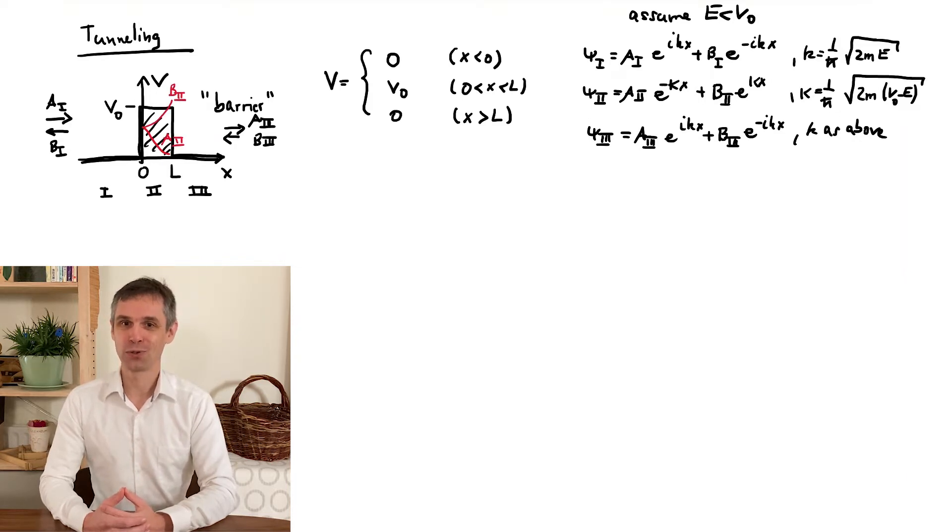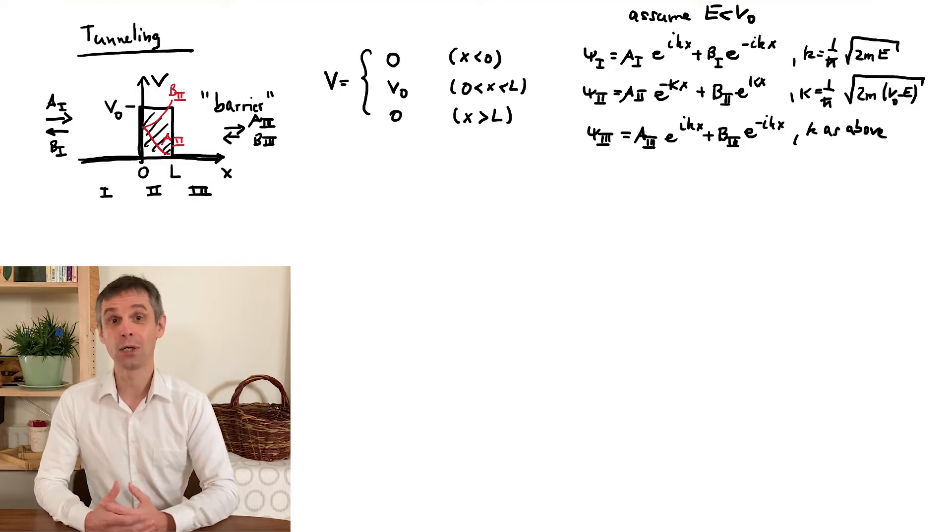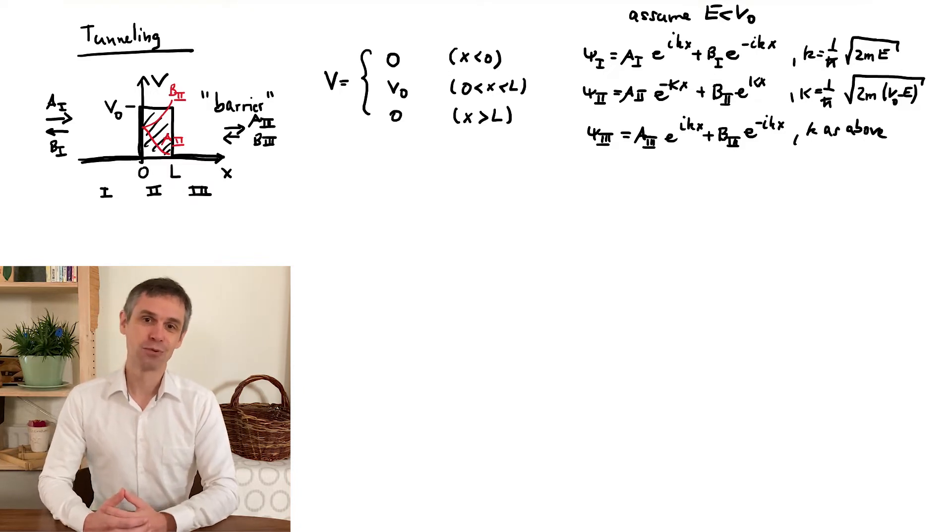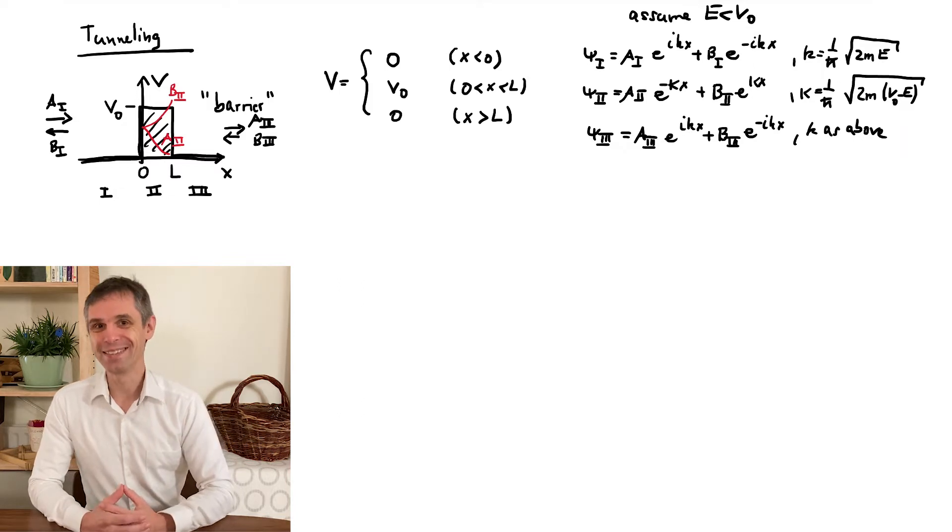In the barrier we now have to keep both exponentials, we cannot rule them out by our boundary conditions, and we will indeed need them to satisfy the continuity conditions.